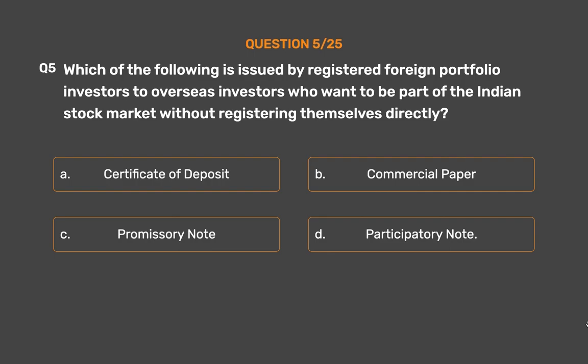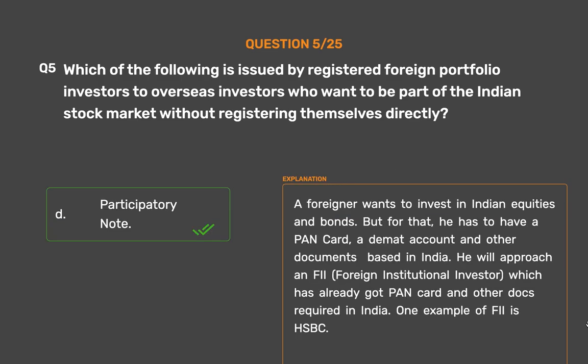The correct answer is Option D: Participatory Note. A foreigner who wants to invest in Indian equities and bonds needs a PAN card, a DEMAT account, and other documents based in India. He will approach a Foreign Institutional Investor (FII) which has already obtained a PAN card and other required documents in India. One example of an FII is HSBC.